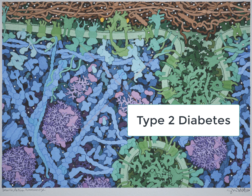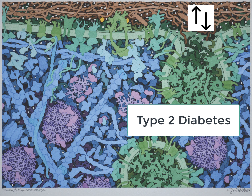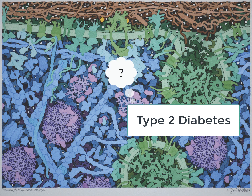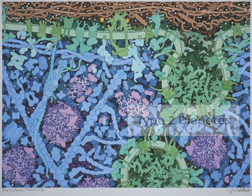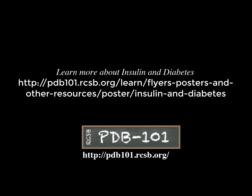This name collectively describes all conditions where insulin signaling may be affected. It is often difficult to specifically diagnose the cause of type 2 diabetes, so the treatment focuses more on managing the overall blood glucose levels within a narrow range than identifying the actual cause of the condition. To learn more about insulin and diabetes in molecular detail, visit PDB101.